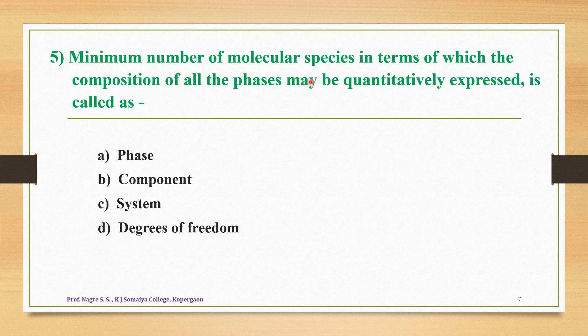Question number five: the minimum number of molecular species in terms of which the composition of all the phases may be quantitatively expressed is called as — option A is phase, option B is component, option C is system, and option D is degrees of freedom. The correct answer is option B — it is called the component. A component is the minimum number of molecular species needed to fully explain the composition of all phases of a particular system quantitatively.